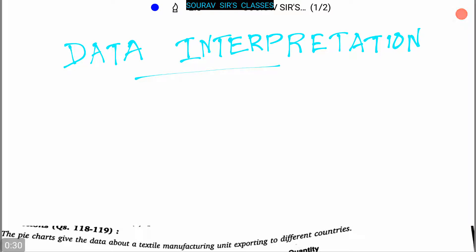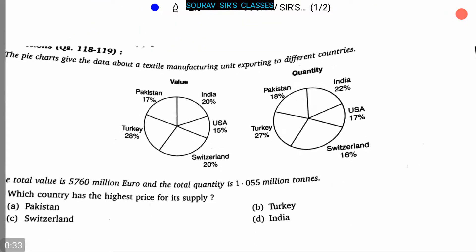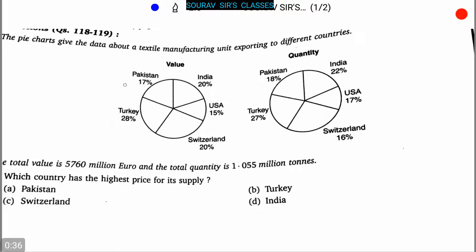Today our topic is data interpretation. Here is our first question: two pie charts are given — one is value based and the other is quantity based. The pie charts give data about a textile manufacturing unit exporting to different countries: Pakistan, India, USA, Switzerland, and Turkey. The total value is 5760 million euro and the total quantity is 1.055 million tons.